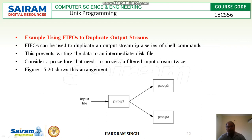Next is using FIFOs to duplicate output streams — how FIFO can be used to duplicate output streams without using intermediate files. FIFO can be used to duplicate output streams in a series of shell commands, preventing the writing of data to intermediate files. For example, we have an input file sending data to program 1, and we want the contents of program 1 to also be written to program 2 and program 3. This can be established using FIFO.